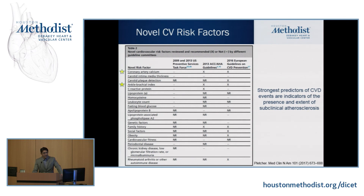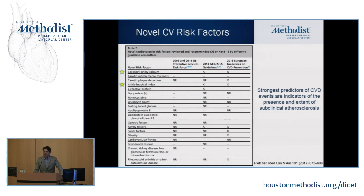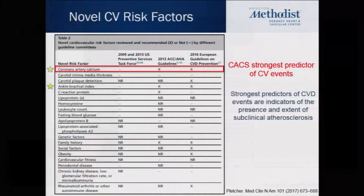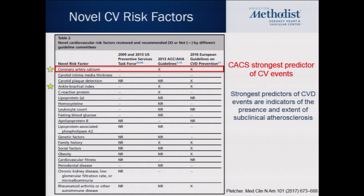There's a whole table of novel risk factors, all associated with CAD. The two I'd like to point out are the ankle brachial index and the calcium score, because both are recommended in the ACC AHA guidelines as well as the 2016 European guidelines. They are very strong predictors of risk because they identify subclinical atherosclerosis. I chose to spend some time on calcium scoring because it is, after all, the strongest predictor of events.